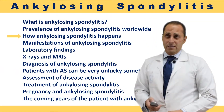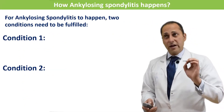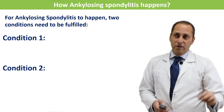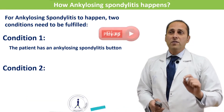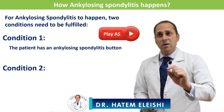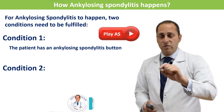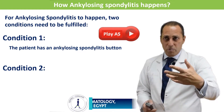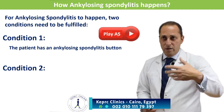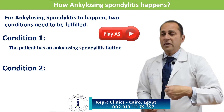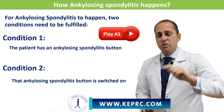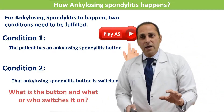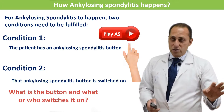How ankylosing spondylitis happens: for ankylosing spondylitis to happen, two conditions need to be fulfilled. Condition one: the patient has an ankylosing spondylitis button in his body. This is not a literal button — I'm using this as a model to explain it. Condition two: someone presses or switches on the ankylosing spondylitis button. So what is the button, and what or who switches it on?